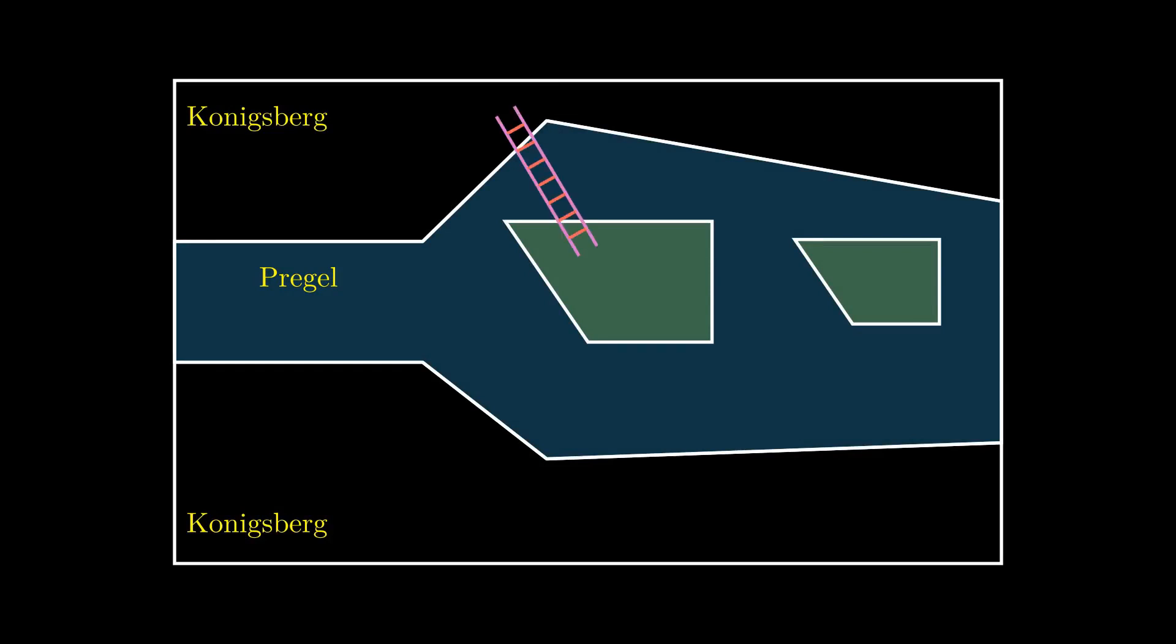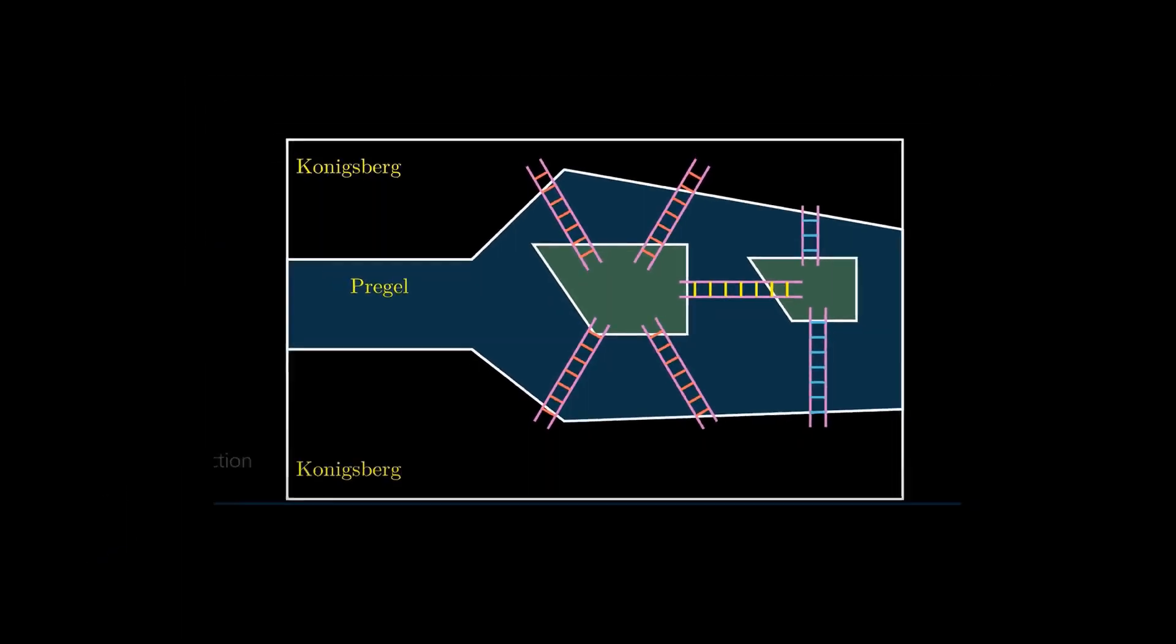The entire setup had seven bridges, six connecting the city to the islands and one between the two islands.